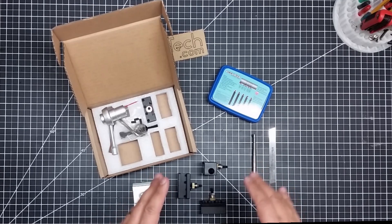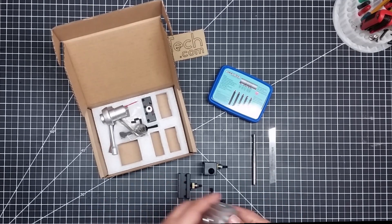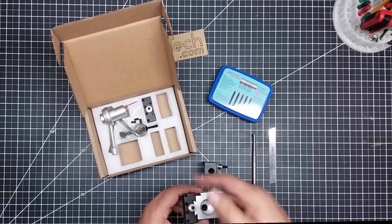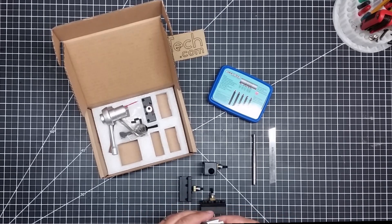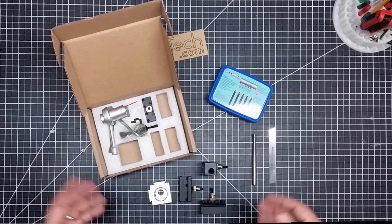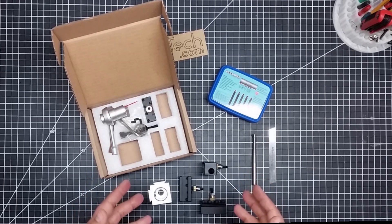And then what happens is when you want to use them, you simply pop them on your quick change tool holder, ratchet that cam, and boom, you're locked in. You're ready to go to work. It makes this crazy simple setup. I kind of kicked myself that I didn't get one of these a long time ago.